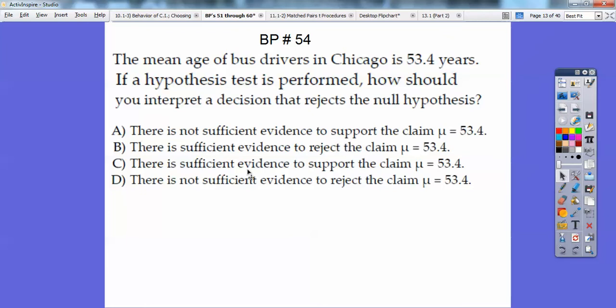So it's choice B on this one. So there is not sufficient evidence, no, that wouldn't be that. There is sufficient evidence to support the claim, no. It says, how should you interpret a decision that rejects the null hypotheses? So we would interpret it by saying this, there is sufficient evidence to reject the claim that it equals 53.4. So B.